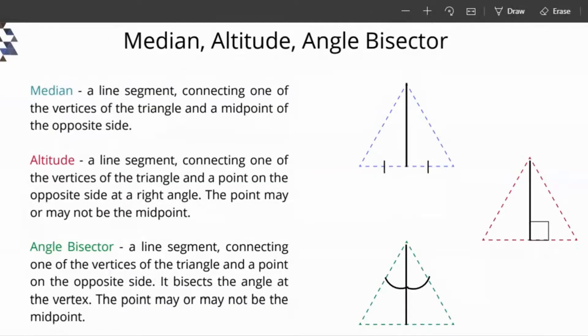Now let's look at median, altitude, and angle bisector. A median is a line segment that connects one of the vertices of the triangle and the midpoint of the opposite side. Therefore, it splits the opposite side into two equal parts. Altitude is a line segment connecting one of the vertices of the triangle and a point on the opposite side at a right angle. The point may or may not be the midpoint depending on the type of the triangle.